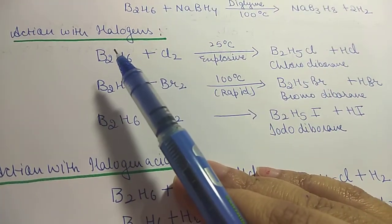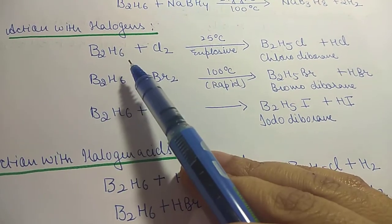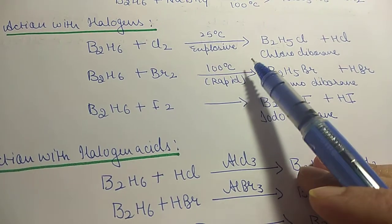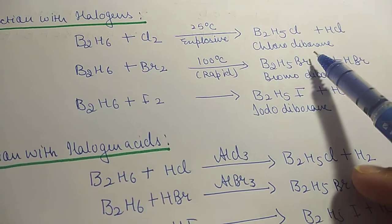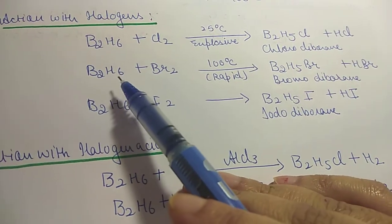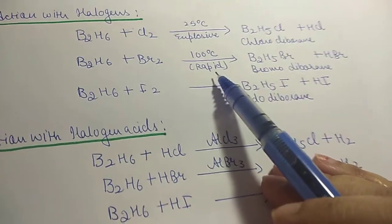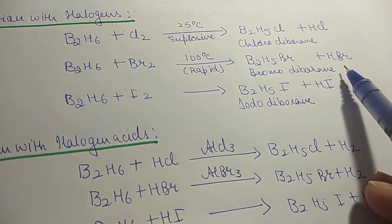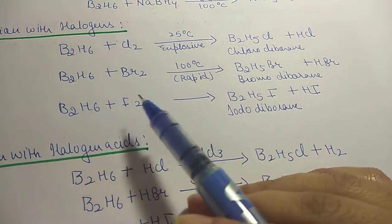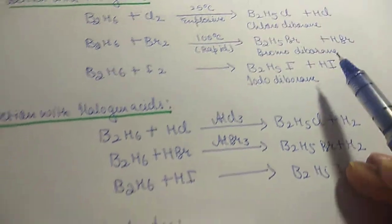Action with halogens — chlorine, bromine, and iodine: B2H6 reacts with chlorine at 25 degrees Celsius to give chlorodiborane and HCl; this reaction takes place with explosion. B2H6 plus bromine at 100 degrees Celsius in a very fast reaction gives bromodiborane plus HBr. B2H6 plus iodine gives iododiborane plus HI.